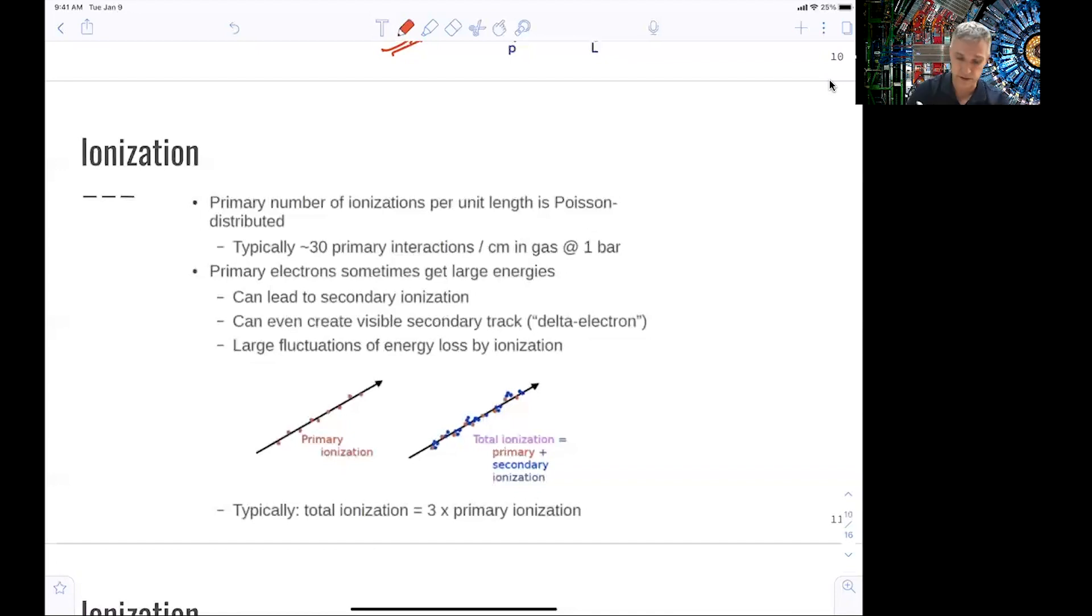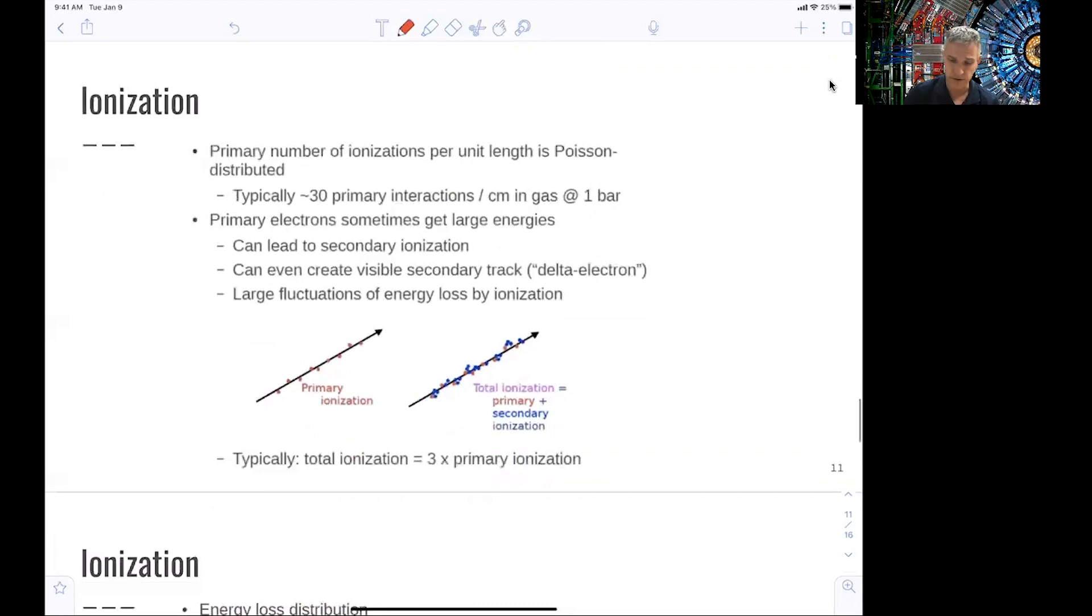Energy fluctuations can be really, really large through ionization. Sometimes you have a really tough interaction and you transfer a lot of energy to the electron, while the mean number is well under control. So interesting, just to give you a feel, you have about 30 primary interactions per centimeter in gas. The total ionization energy you find is typically three times the primary ionization energy. So you cause those seeds of ionization and then the energy moves away from this initial track.